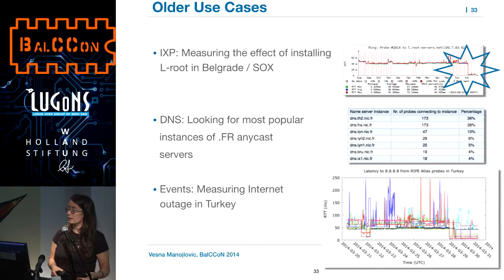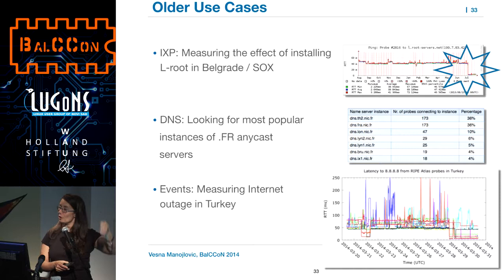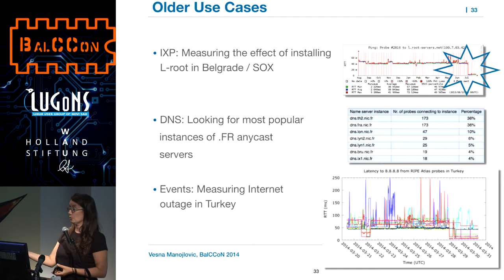Somebody also had a case where their customer said 'I can't reach your server.' They scheduled a measurement and found one of their upstream providers was having problems, so they switched to the backup provider and solved it — they wrote an article about it. We also do analysis of outages; the most recent one was Time Warner Cable, and you could see some probes just stopped reporting for a while. When the Open Exchange in Belgrade installed the L-root instance, probes showed latency dropped from 50 to 5 milliseconds.